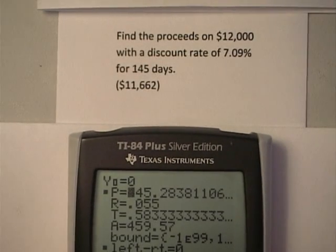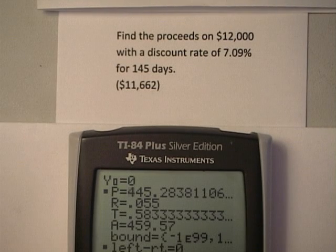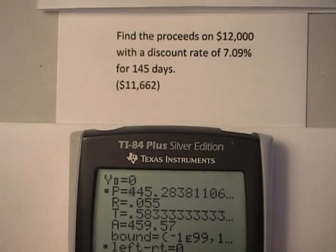Okay, now I'm going to do a proceeds problem, a little bit different, a little different equation that you're going to use. So I'm going to find the proceeds on $12,000 discounted at 7.09% for 145 days.